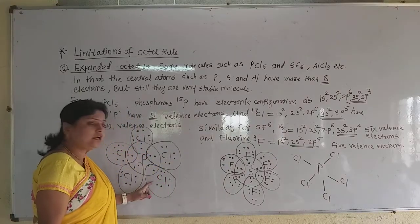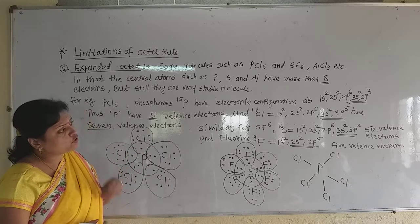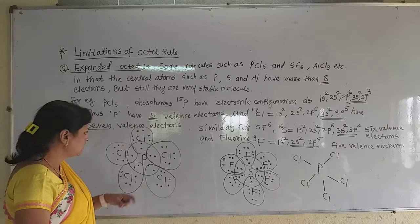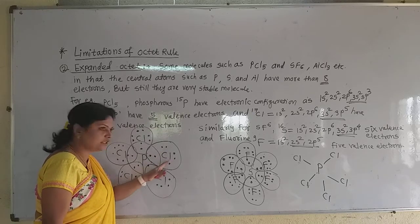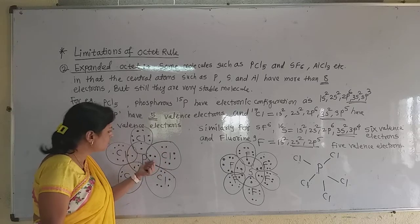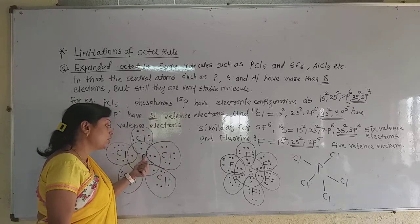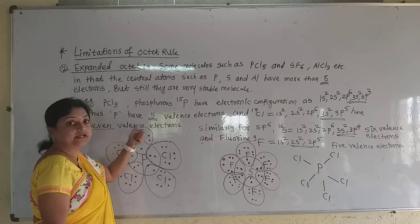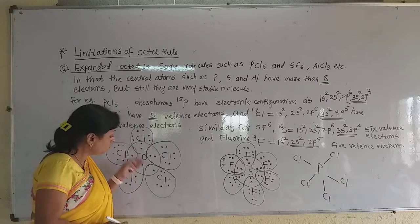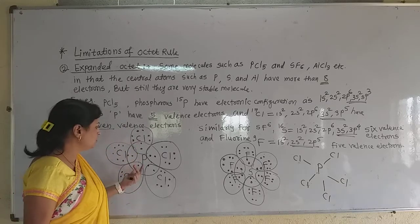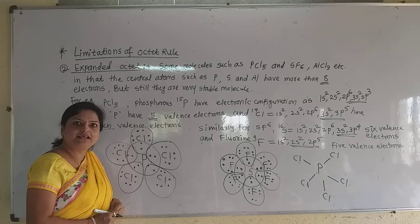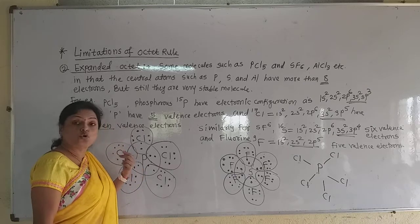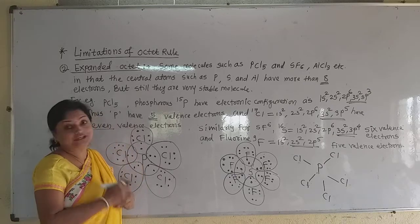Here also, chlorine completes its octet. The electronic configuration of chlorine is 1s2, 2s2, 2p6, 3s2, 3p5 — 7 electrons. These 7 electrons are shown: 3 lone pairs are 6 electrons, and the 7th takes part in bond formation. So every chlorine atom completes its octet and satisfies the octet rule. But what about phosphorus? Phosphorus has more than 8 electrons around it — so this molecule does not obey the octet rule in place of phosphorus.